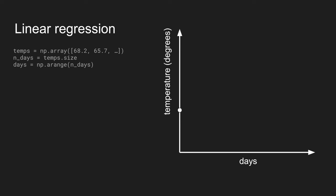We can plot this now using days on the x-axis and temperature on the y-axis. The first day, day zero, has the 68.2 associated with it. We can plot that and so forth for all the rest of our temperatures across all the rest of our days.